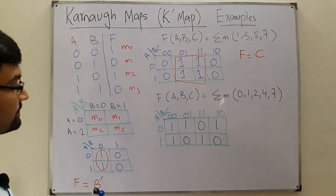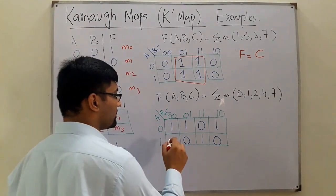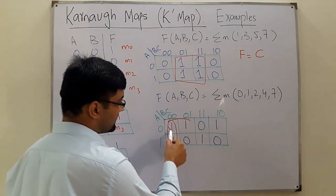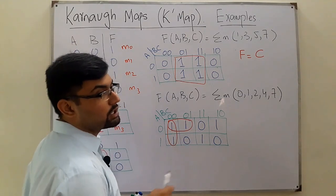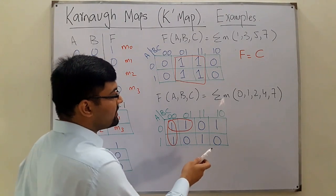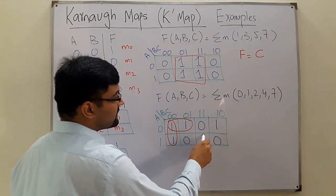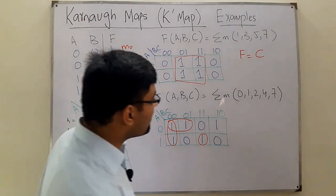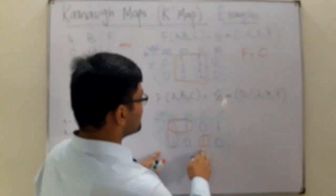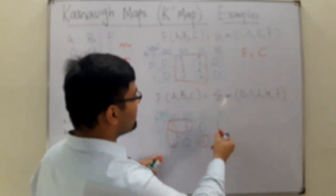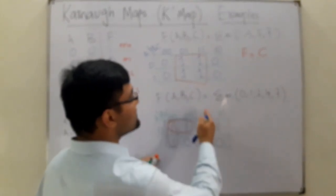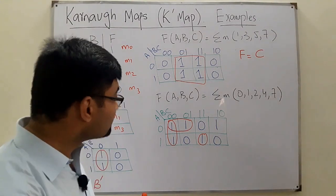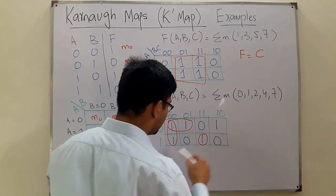Now you group the ones. You can group in either direction. We group these two, and I told you that a single one can be used in more than one group. One cell cannot be grouped with its neighbors, so you can leave it alone as its own group. You cannot group diagonally because in a diagonal two variables change simultaneously, which violates K-map rules. However, corner grouping is allowed.